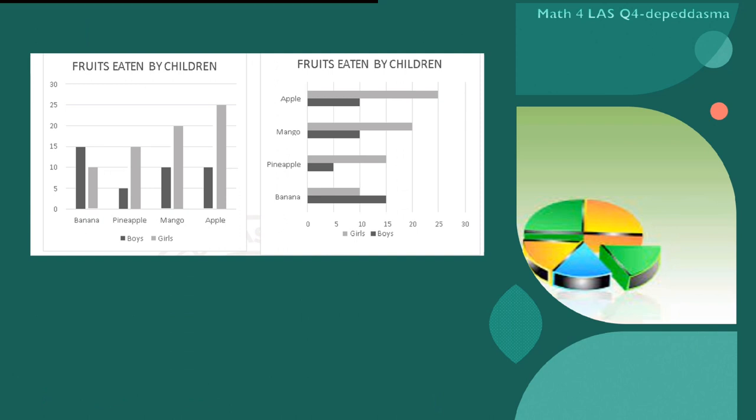We can also present this using the double bar graphs. Double bar graphs help us to compare or present more than one kind of information instead of just one by using bars. Double bar graphs can be vertical or horizontal.